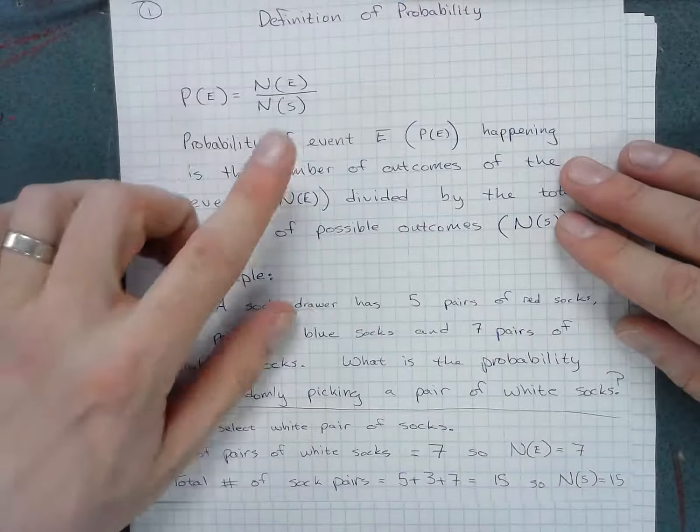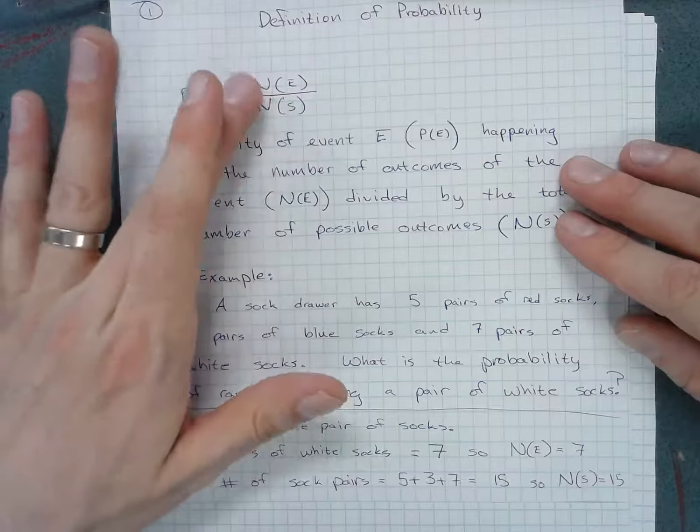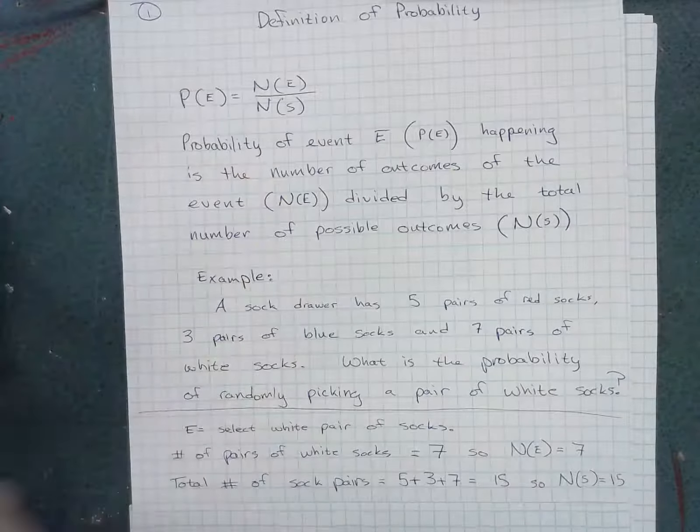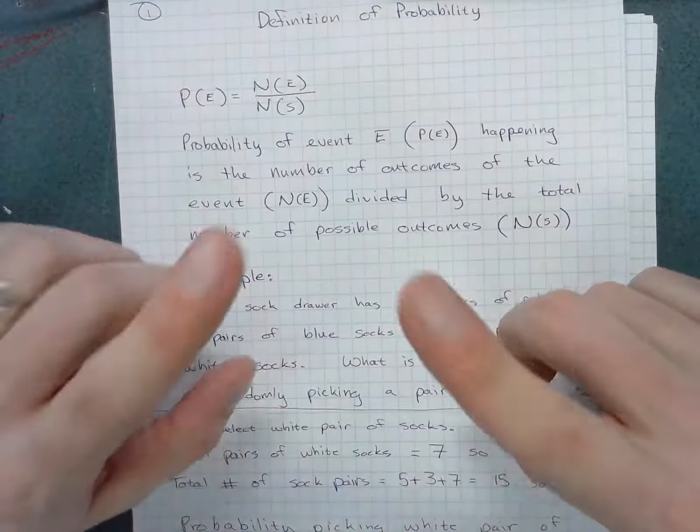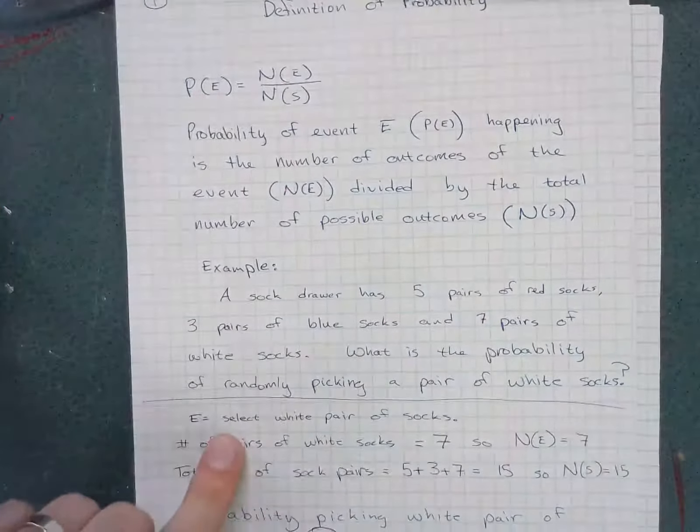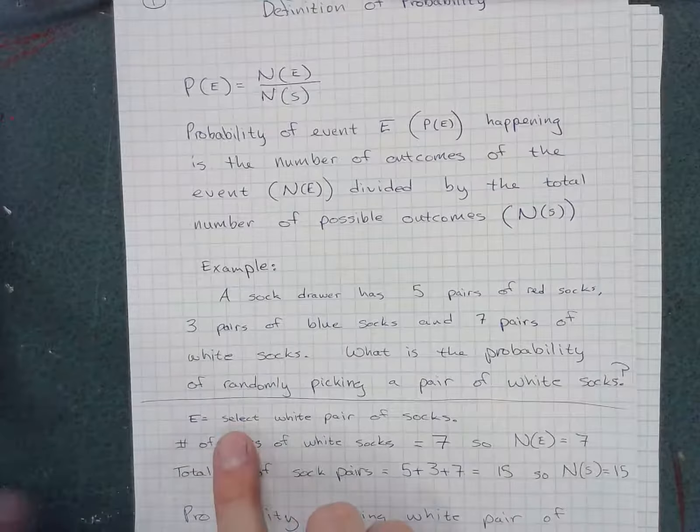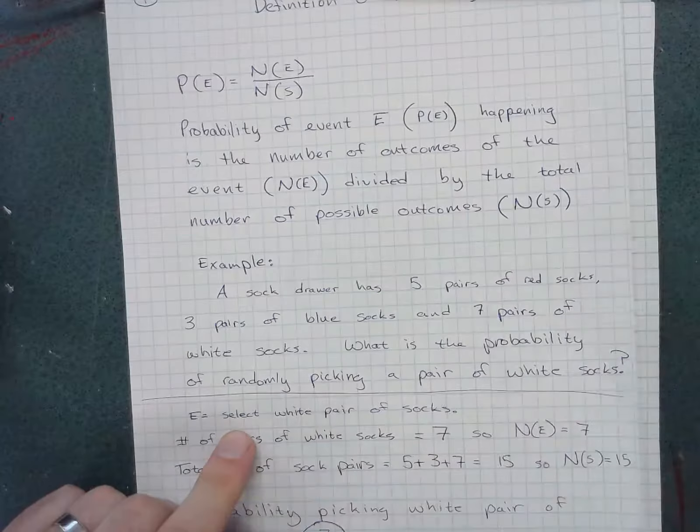The numerator, the event, is another way of saying the thing that we're interested in. E is going to be the event that we're going to select a pair of white socks.